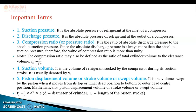The next term is compression ratio, also called pressure ratio. It is the ratio of absolute discharge pressure to absolute suction pressure. Since absolute discharge pressure is always greater than absolute suction pressure, the compression ratio is always greater than one. In terms of volume, the compression ratio is defined as the ratio of total volume of the cylinder (V) to the clearance volume (Vc), written as Rp = V / Vc.